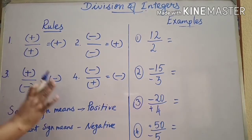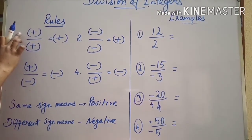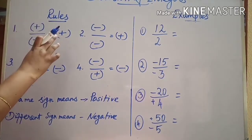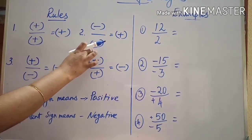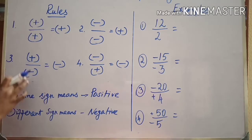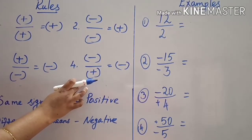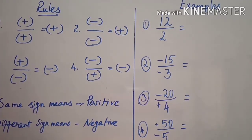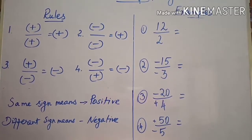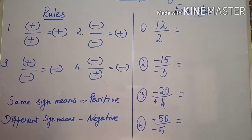Now we are going to learn division of integers. We divide the numbers and then put the symbol — both rules are the same. Positive divided by positive is positive. Negative divided by negative is also positive. Positive divided by negative, or negative divided by positive — the answer is negative. Same sign means positive; different sign means negative. The only difference from multiplication is that here we divide the numbers instead of finding the product.